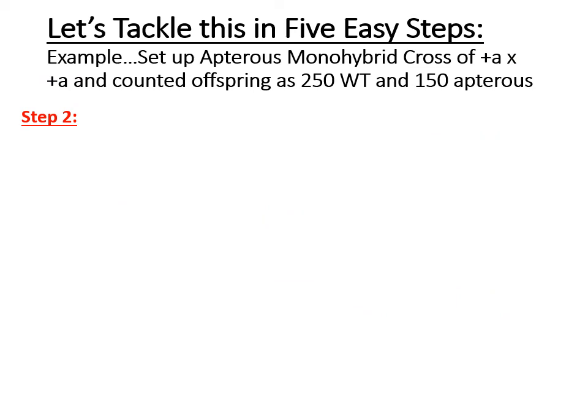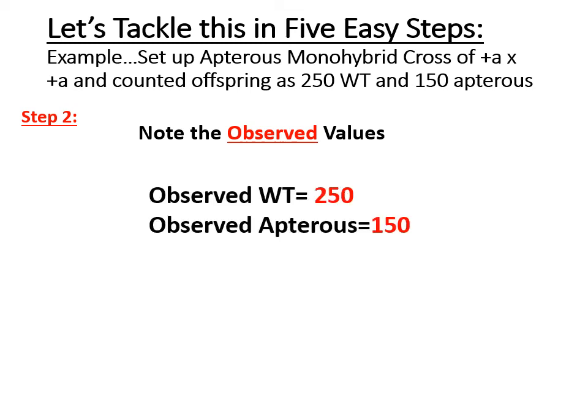Step two is everyone's favorite because it is the easiest. You simply note the observed values for each of your phenotypes as given in the problem. In our problem, we have two phenotypes: wild type and apteris. The observed numbers are right in the question itself — observed wild type = 250, observed apteris = 150.